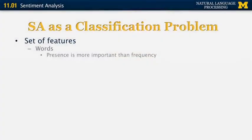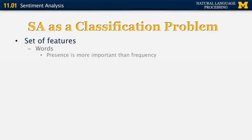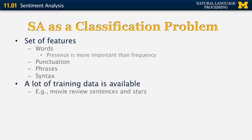So let's look at sentiment analysis as a classification problem. We want to classify documents or sentences into positive or negative. The features we can use include individual words — whether they appear or not, since we're not really interested in their frequency as they're usually used just once — as well as punctuation, emoticons, phrases, and the syntax of the sentence. One good thing about sentiment analysis is that a lot of training data is available: we can take entire websites with product reviews and look at the number of stars given to a product, using this as a training dataset.